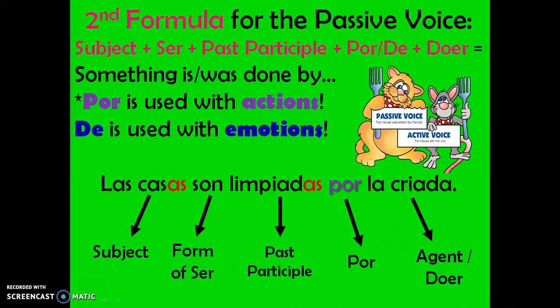Now, going back to our second formula — this is when we have a word-for-word translation of the passive voice, when we know by whom an action is done. Let's say our formula again together: subject plus ser plus past participle plus por or de plus agent or doer. We use por if it's an action being done, and de if it's an emotion like loved by, respected by, or admired by.